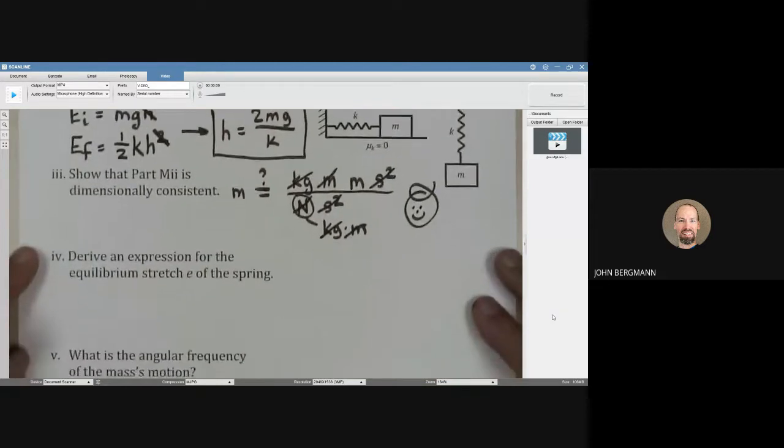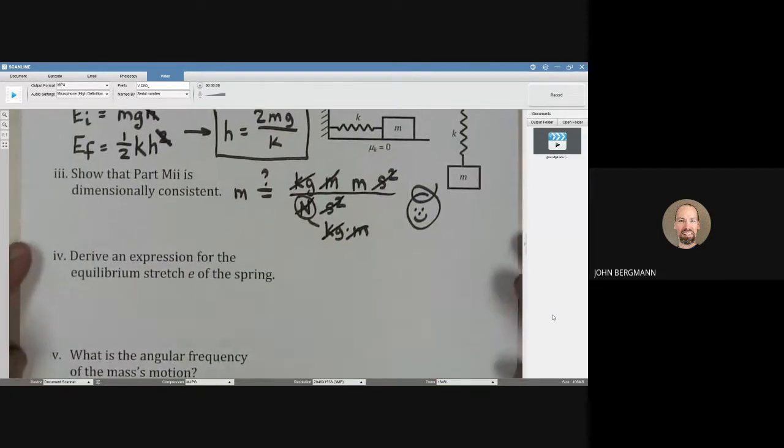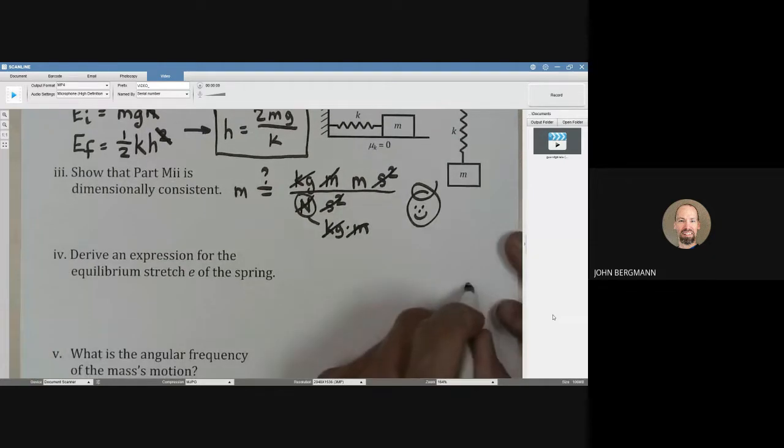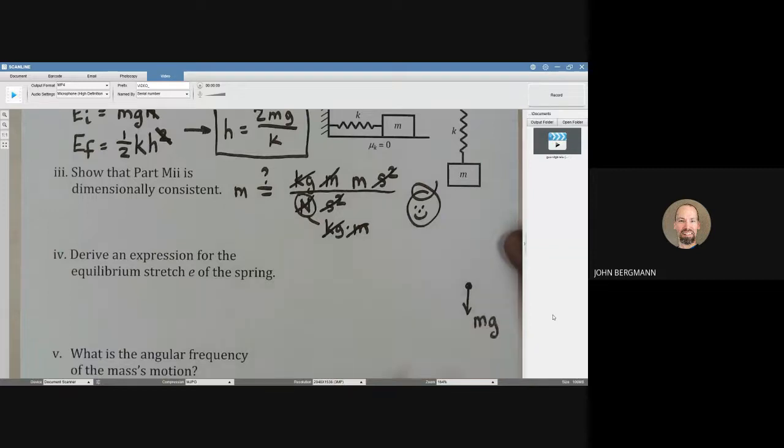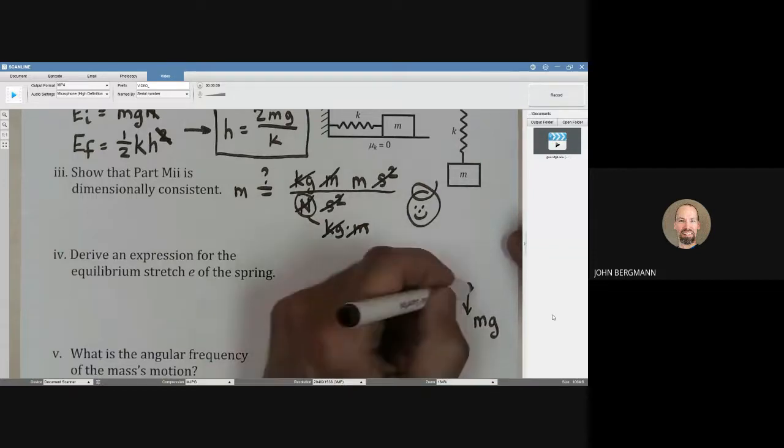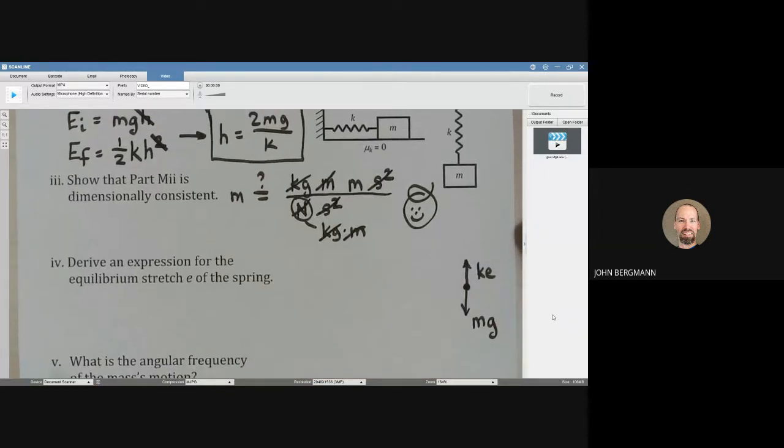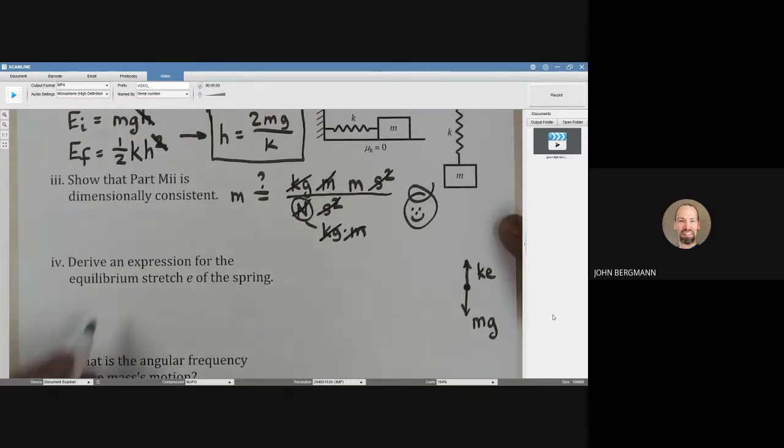Number four. Derive an expression for the equilibrium stretch E of the spring. At equilibrium, we're going to have M times G pulling down. And at equilibrium, isn't it true that the upward force should equal that? To me, it looks like K E is going to equal M G. And let's see. What do we know here? That's one expression we could write for E.